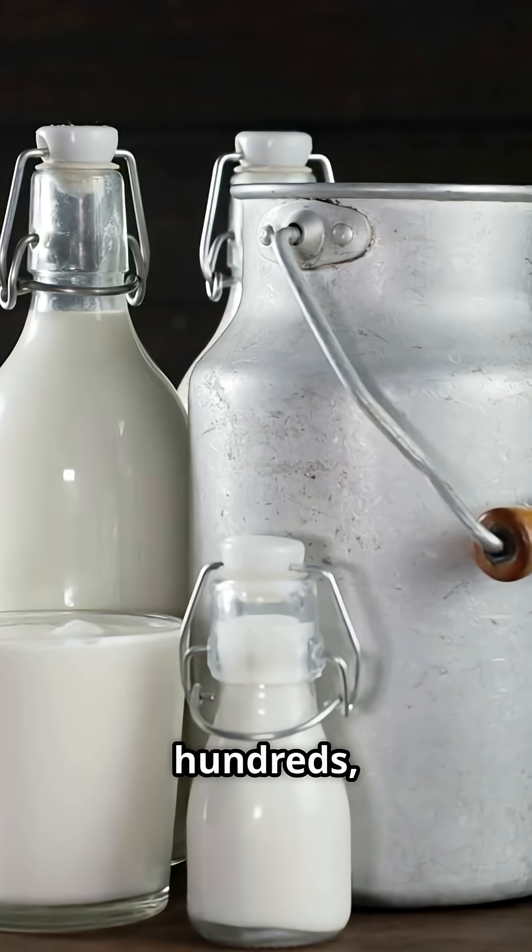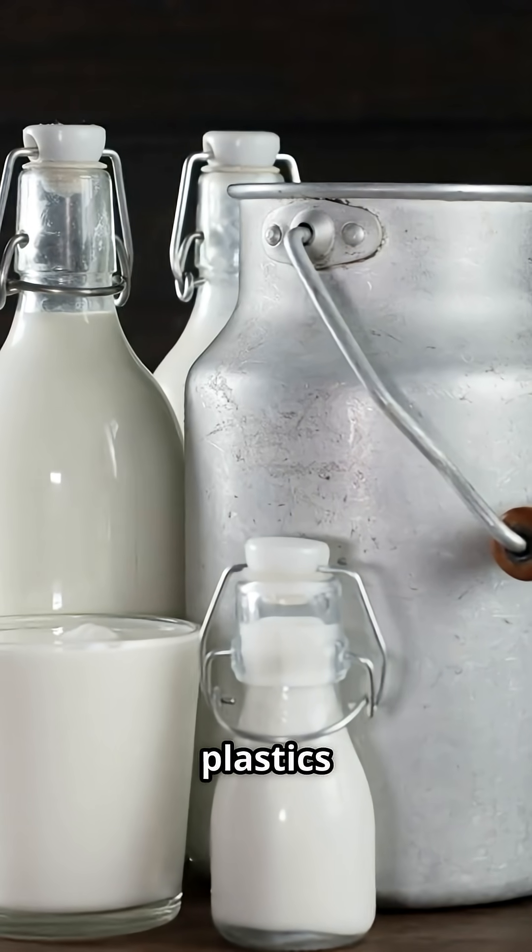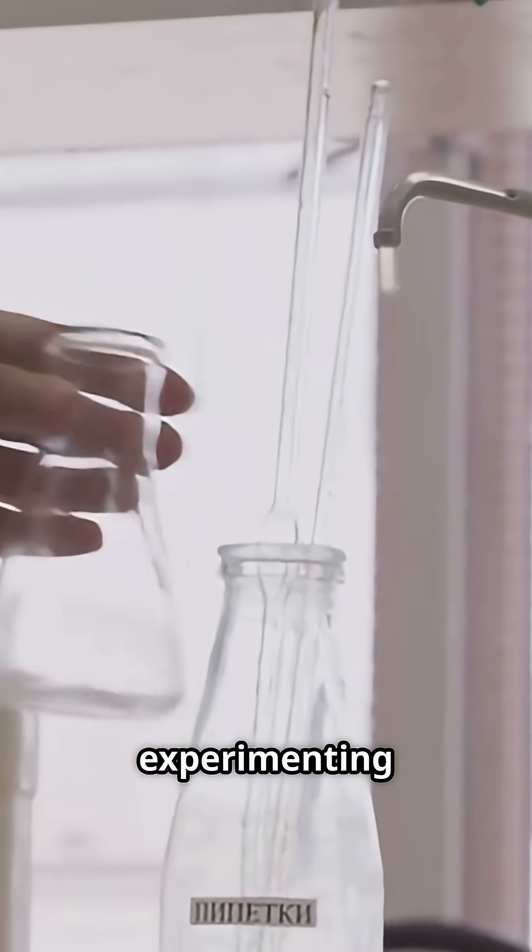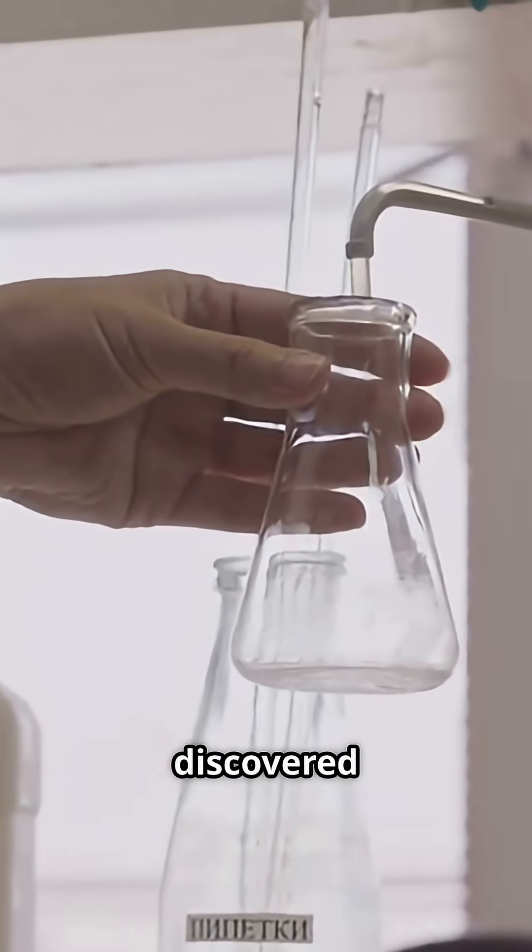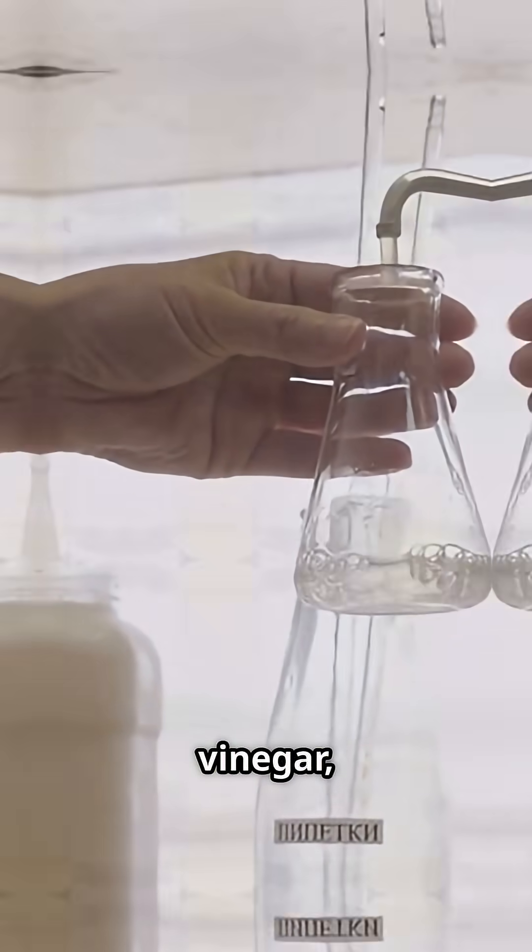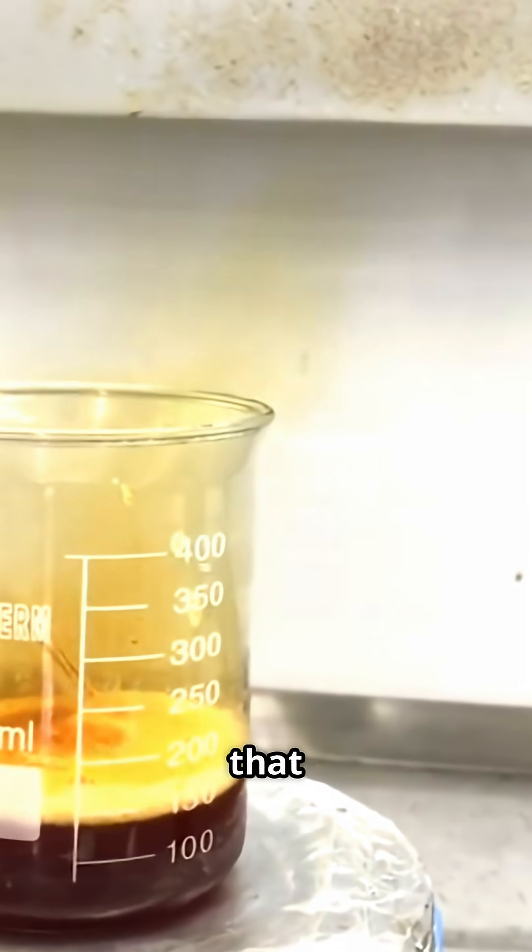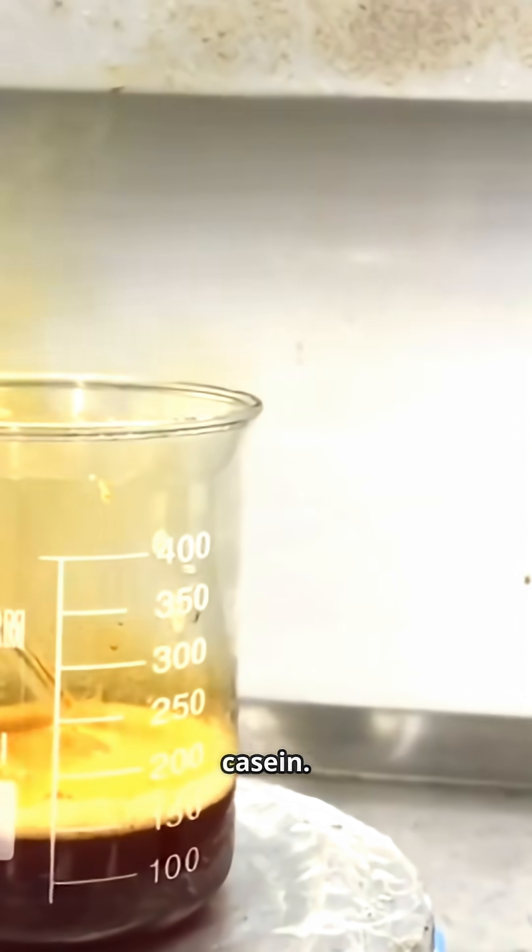Back in the early 1900s, before petroleum-based plastics took over, inventors were experimenting with milk. They discovered that when you mix milk with an acid, like vinegar, it causes a chemical reaction that separates out a protein called casein.